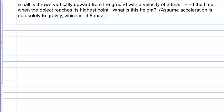Let's work through the following problem together. A ball is thrown vertically upward from the ground with a velocity of 20 meters per second. Find the time when the object reaches its highest point. What is this height? Assume acceleration is due solely to gravity, which is negative 9.8 meters per second squared.